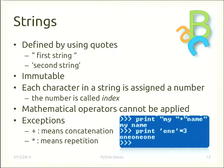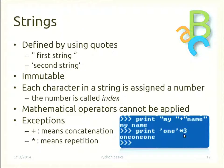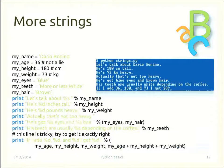Mathematical operators cannot be applied to strings except for the plus and asterisk operators. The plus means concatenation — print 'my' plus 'name' prints 'myname'. The asterisk means repetition — print 'one' multiplied by three prints 'oneoneone'.